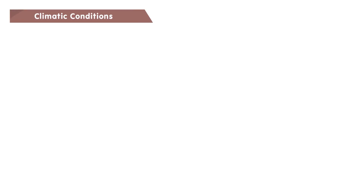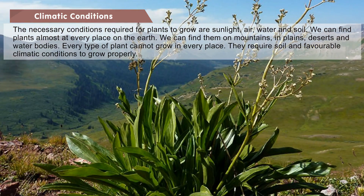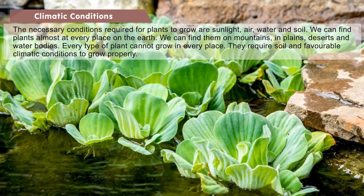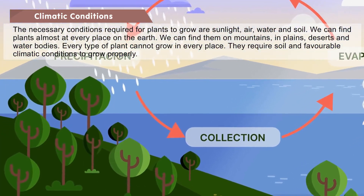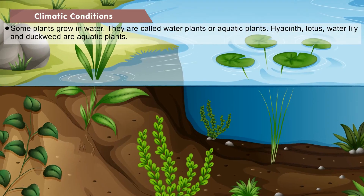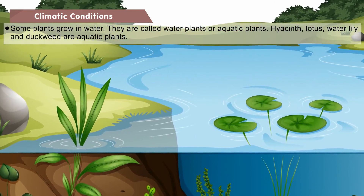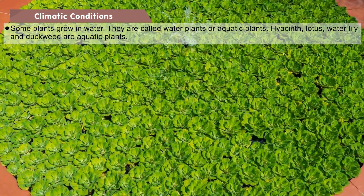Climatic conditions: The necessary conditions required for plants to grow are sunlight, air, water and soil. We can find plants almost everywhere on the earth — on mountains, in plains, deserts and water bodies. Every type of plant cannot grow in every place; they require soil and favorable climatic conditions. Some plants grow in water; they are called water plants or aquatic plants. Hyacinth, lotus, water lily and duckweed are aquatic plants.